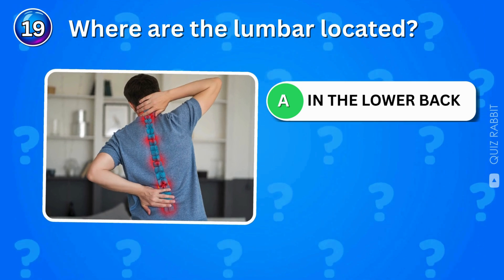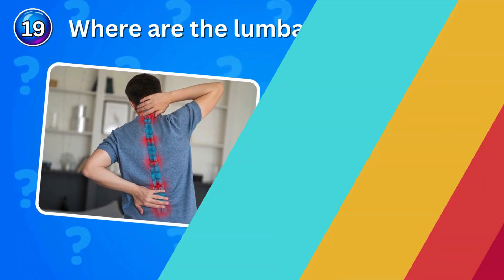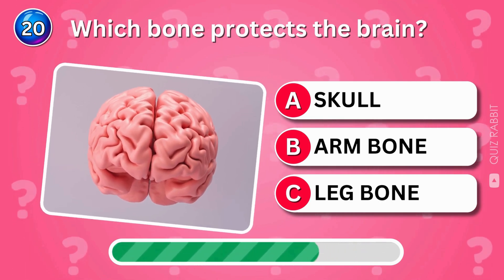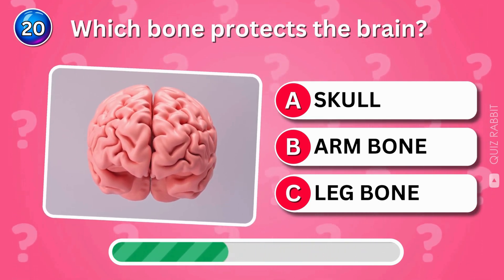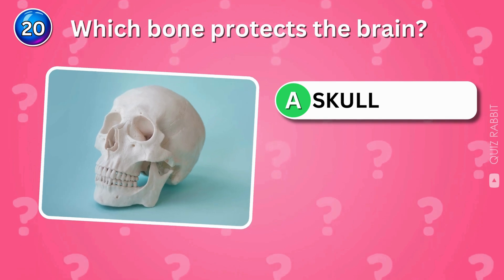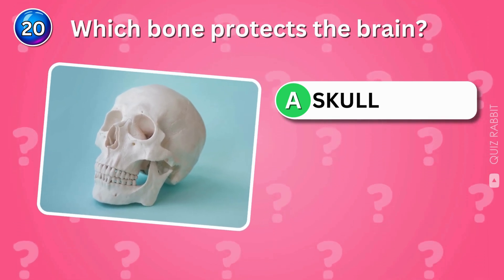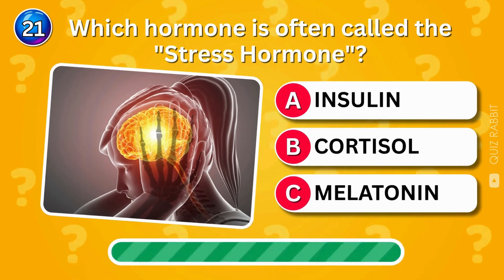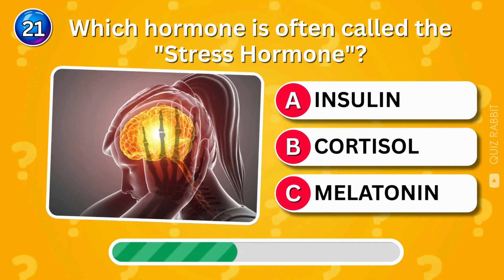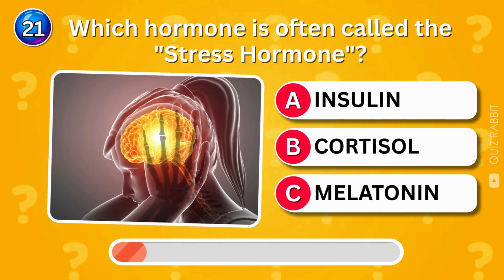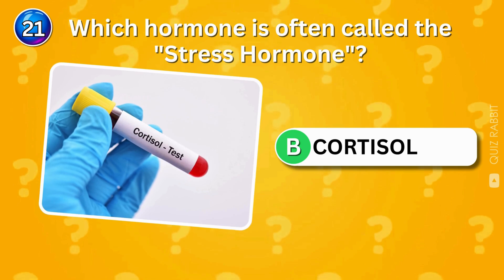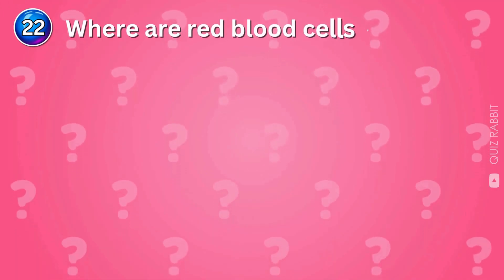Which bone protects the brain? The skull protects the brain — nature's very own helmet. Which hormone is often called the stress hormone? Cortisol is the stress hormone — too much can make you feel overwhelmed.